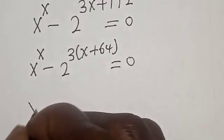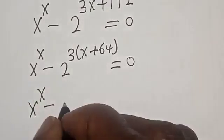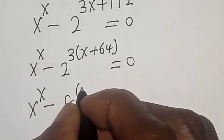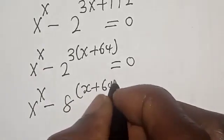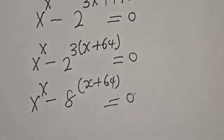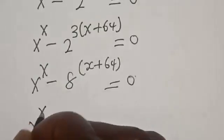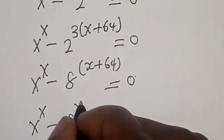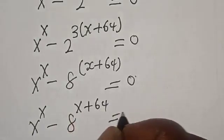Now, since 2 raised to the power 3 is 8, we can rewrite the equation as s raised to power s minus 8 raised to power s plus 64 equals 0.